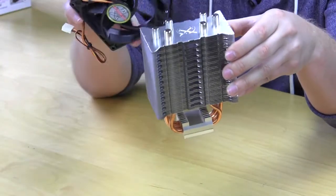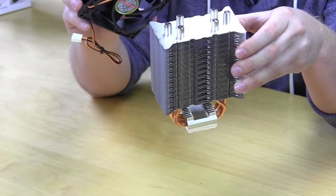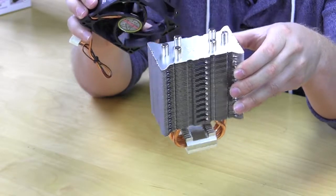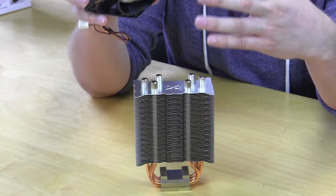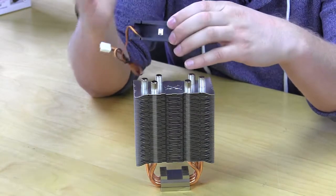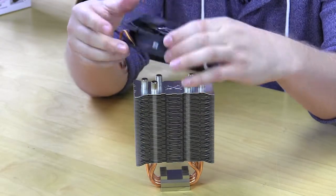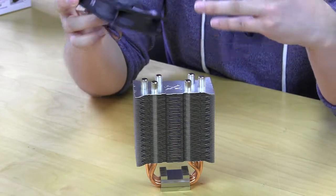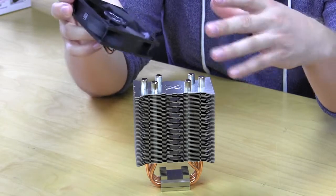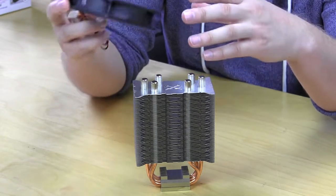The fan itself is SIF's own slipstream 92 millimeter PWM fan. PWM means that the hotter that the temperature gets on your CPU, the faster this fan will spin. So if you're not doing a lot of work, it's going to spin slower, which actually means it's going to use less power. And on top of that, it's actually going to be quieter.